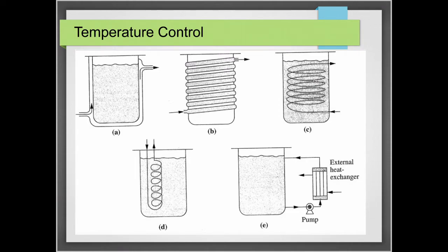For configurations C, D, and E, the temperature control coils are situated inside the fermenter. This offers faster and better heat transfer rates than external cooling, though you must consider potential contamination from the cooling water. In C, a coil is placed inside the reactor. In D, the coil also serves as a baffle. In E, you withdraw the culture fluid, pass it through an external heat exchanger, and then return it to the culture media.